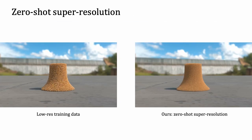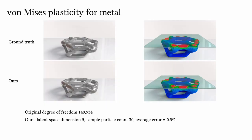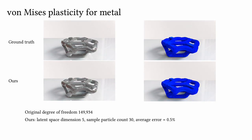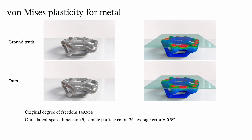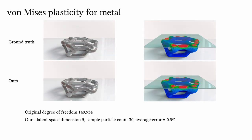After training on low-resolution simulations, our method can directly infer high-resolution results by querying the continuous neural deformation field. Our model is also capable of learning the bouncing back of a squeezed metal due to hardening, with latent space dimension r set to 5. With merely 30 sample particles, we achieve an average error of 0.5%. Our neural stress field can also accurately capture the stress distribution, extending its usage in fields of engineering.